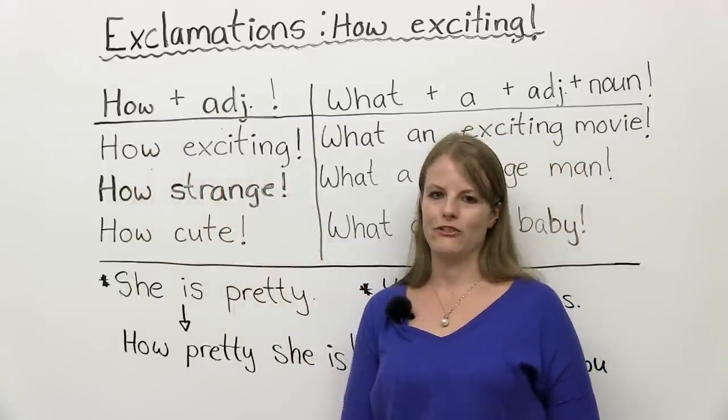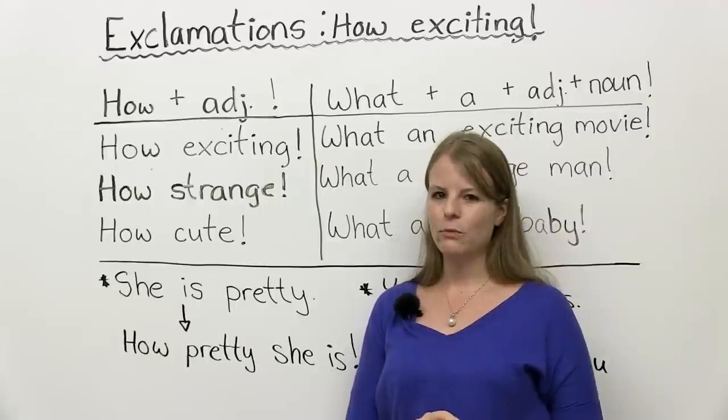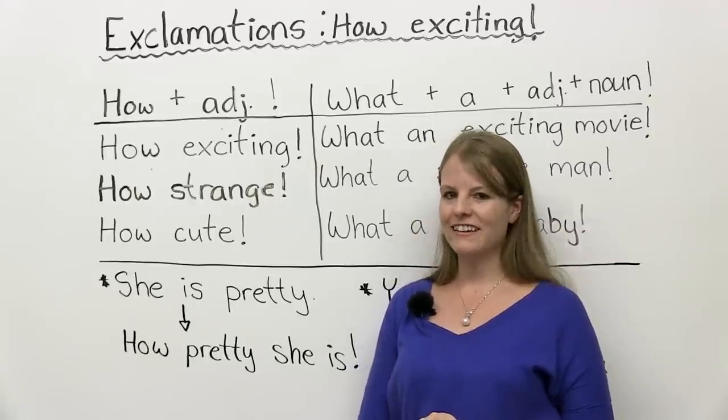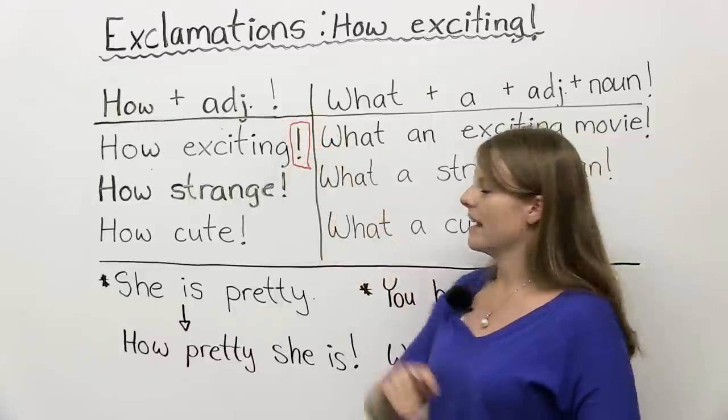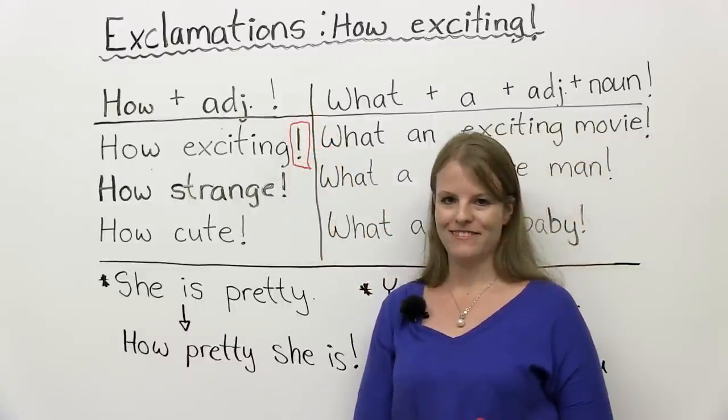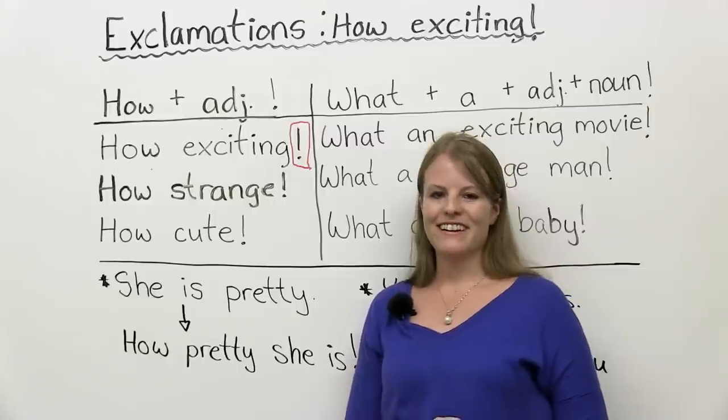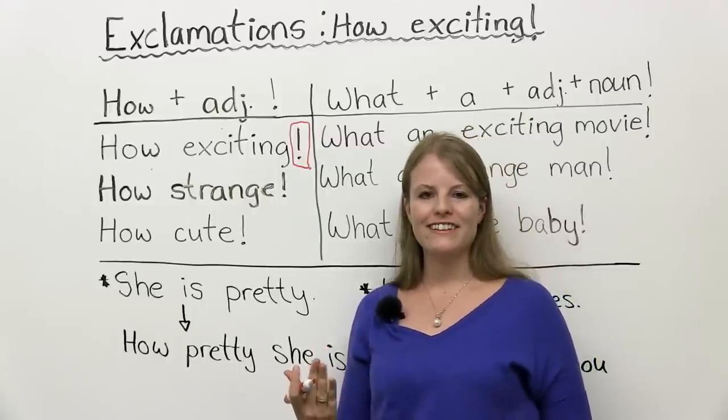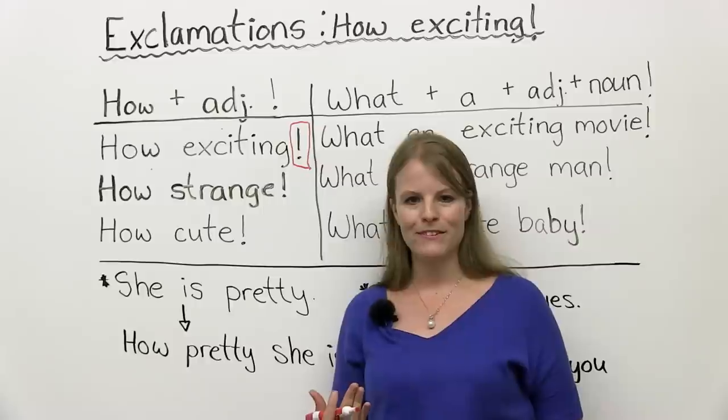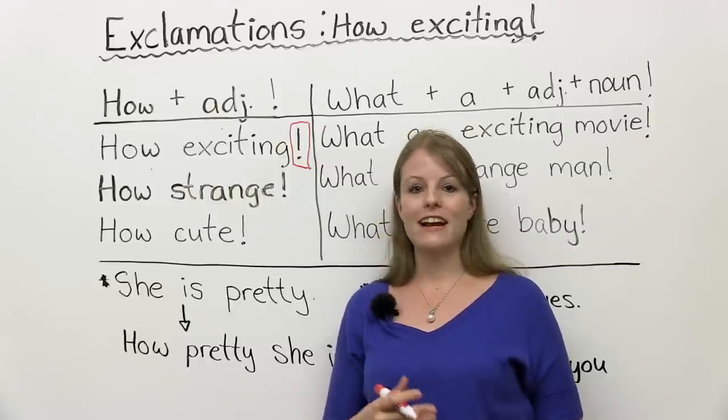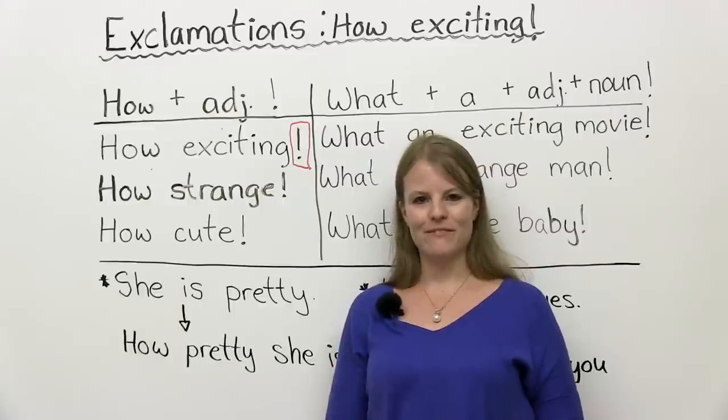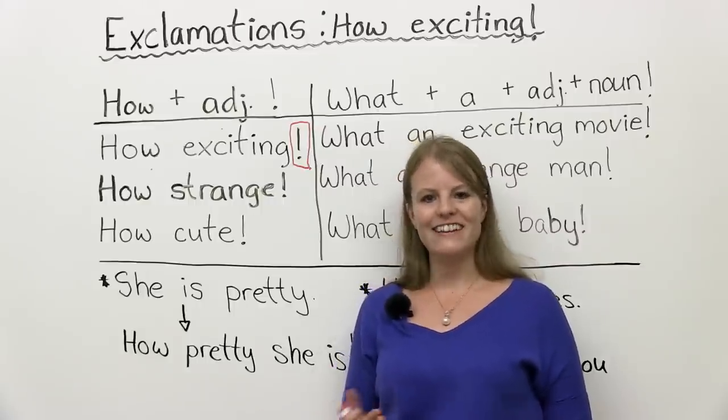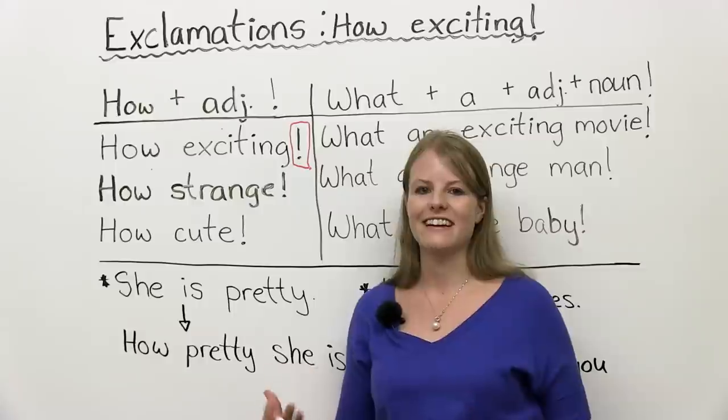This is an exclamation. And do you notice what is at the end of this sentence? That's right. An exclamation mark. So maybe you're talking to your friend. They're telling you about their job. What's their job? Maybe they're an astronaut. They go to space. What would you say to them? You'd say, how exciting. Meaning you're very excited for them.